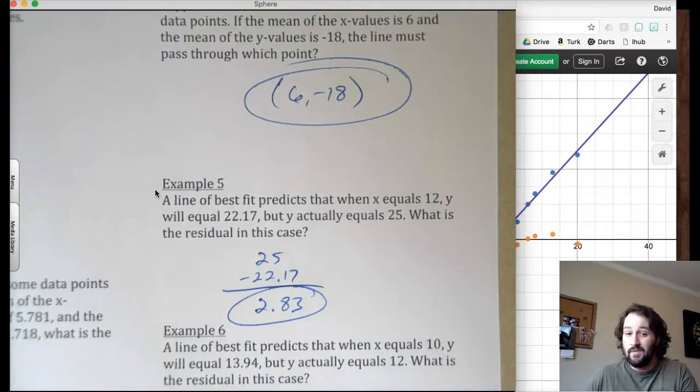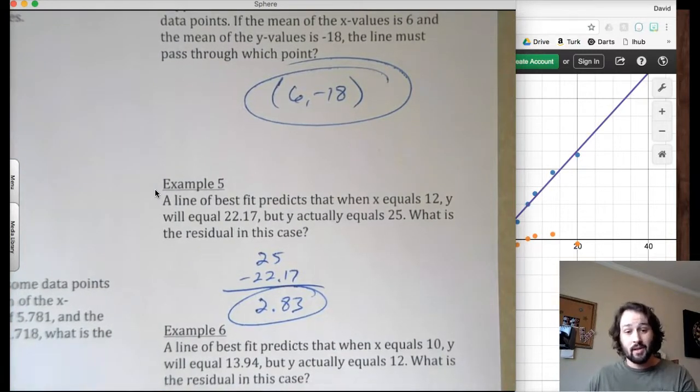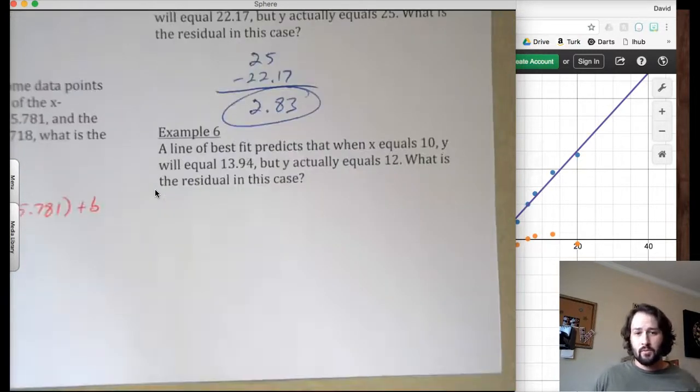That's it. If it were below, then it would be a negative value. So maybe we'll do one right now.